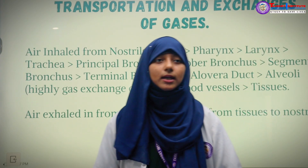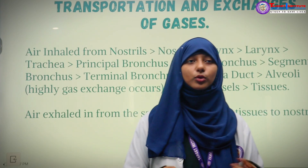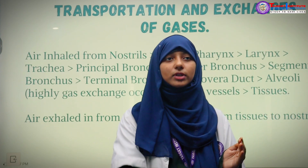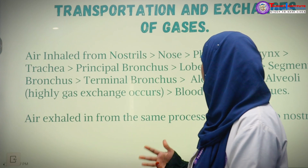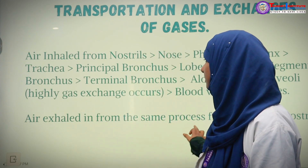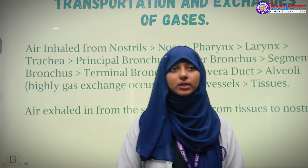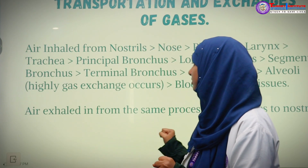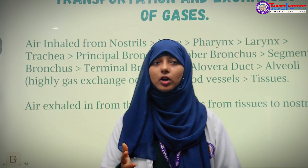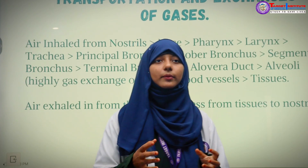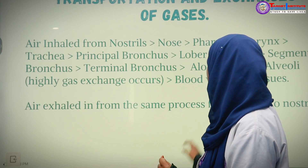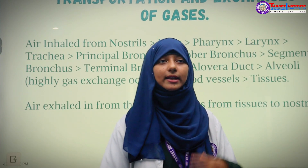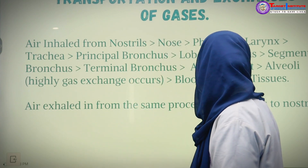For transportation of gases, oxygen-rich air goes through our nostrils to the nasal cavity, then to the oral cavity, then pharynx, larynx, trachea, principal bronchus, lobar bronchus, segmental bronchus, and terminal bronchus. From there it goes into the alveolar duct and then to the alveoli — the smaller sacs within our lungs where highly efficient gas exchange occurs. Then oxygen-rich blood, called oxyhemoglobin, goes to the blood vessels and then to the tissues. The exhaled air travels back out from the tissues through the same pathway to the nostrils.